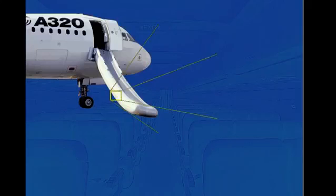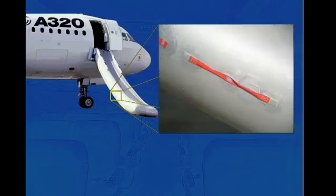In case of a pressure loss, the red handles on the lower part of the escape device allow the slide to be used as a hand-held escape chute.